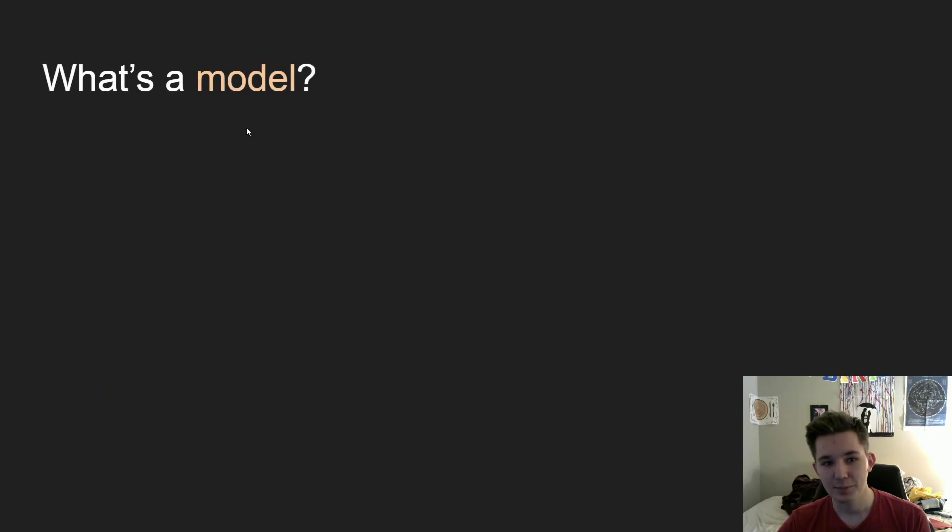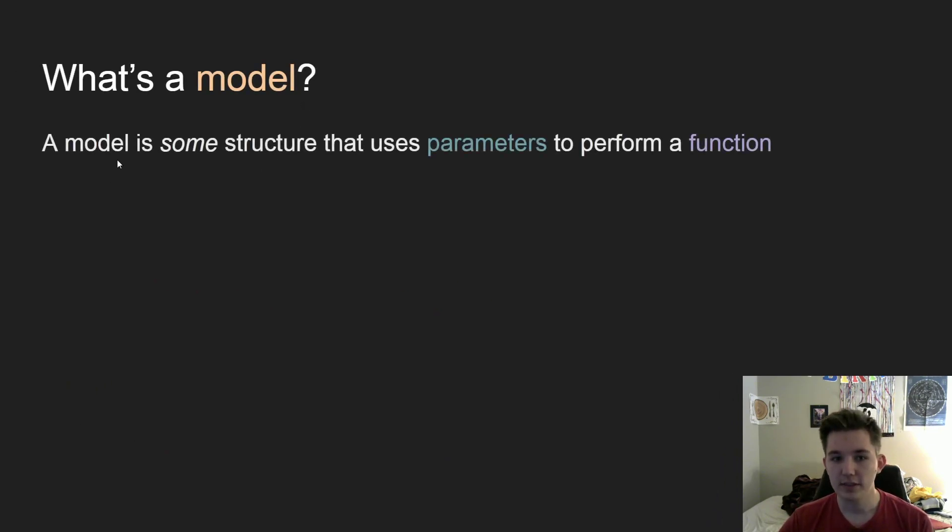As you'll see, we're going to talk about a model. So our model is going to be some structure. There's a lot of variation in the types of structures we use. One example that you have heard about, I'm sure, is a neural network. And we will be getting there eventually, just not quite yet.